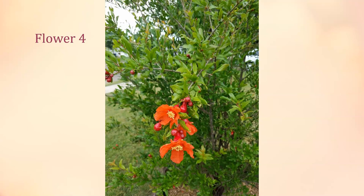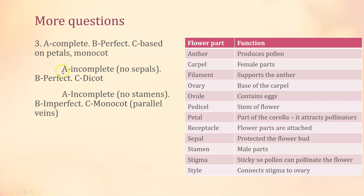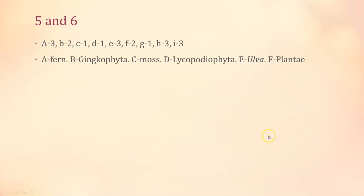Questions one and two — pause the video and get the answers. Table two is a summary of everything we've done in this chapter. Question three has three parts, question four is anatomy and physiology of flower parts, number five is here, and number six has multiple parts — here are the answers for the second part of number six. Pause and get what you need.